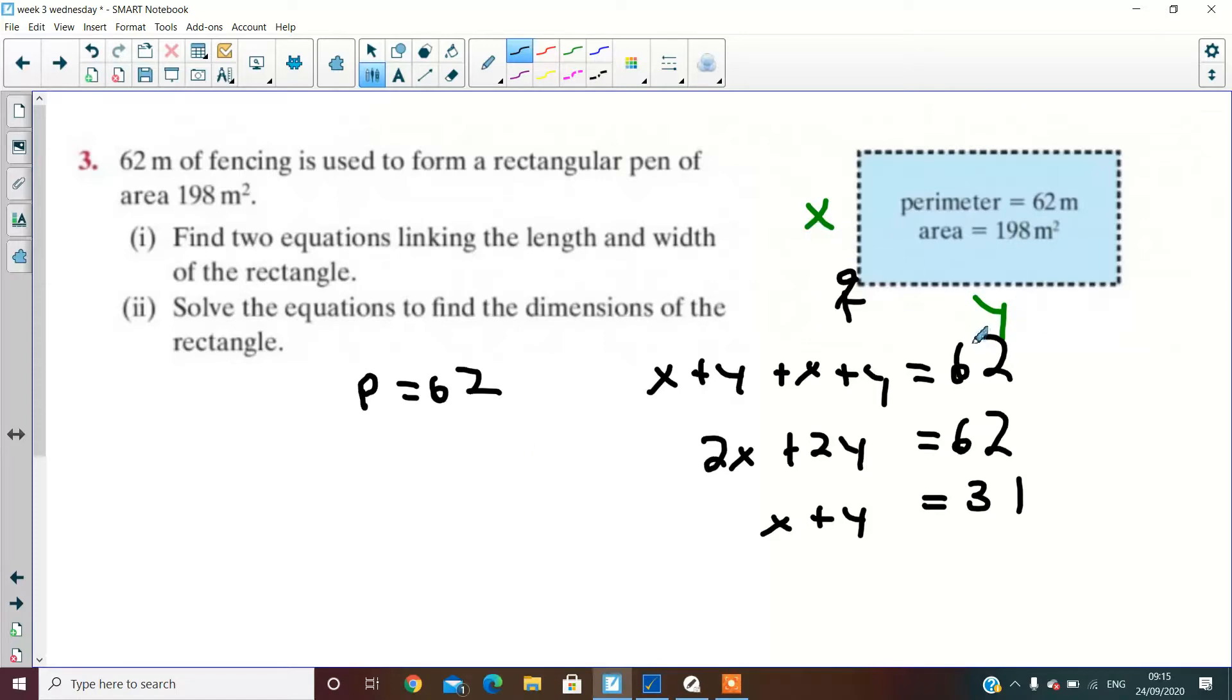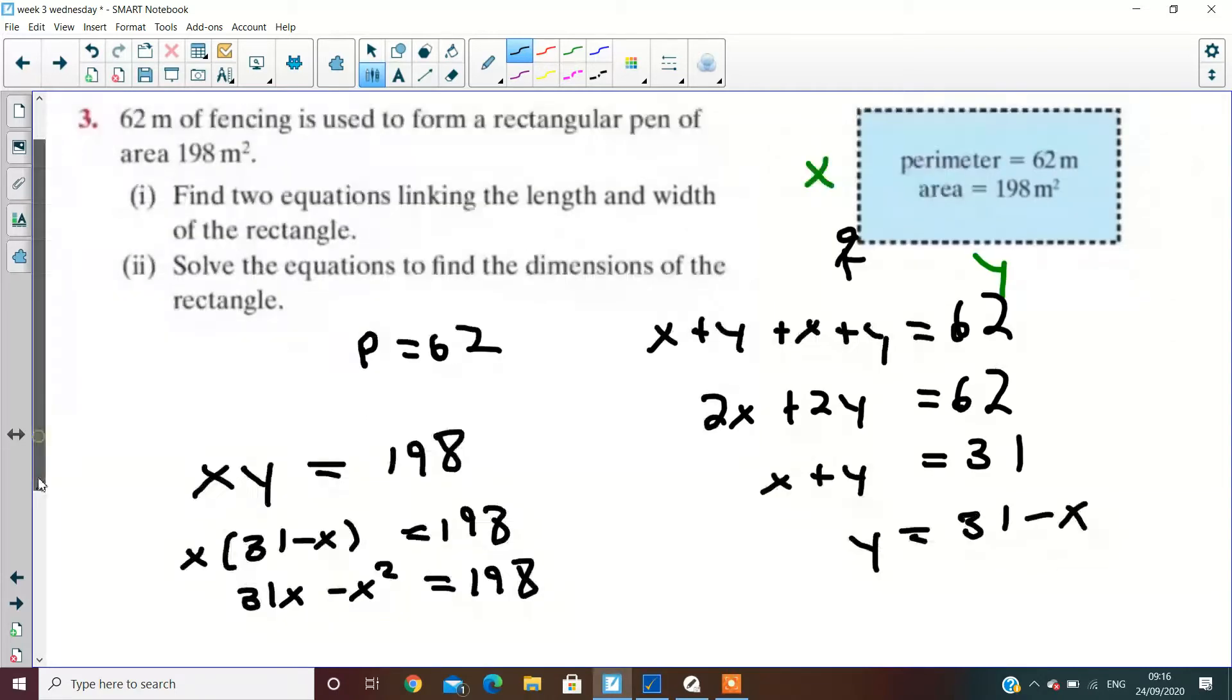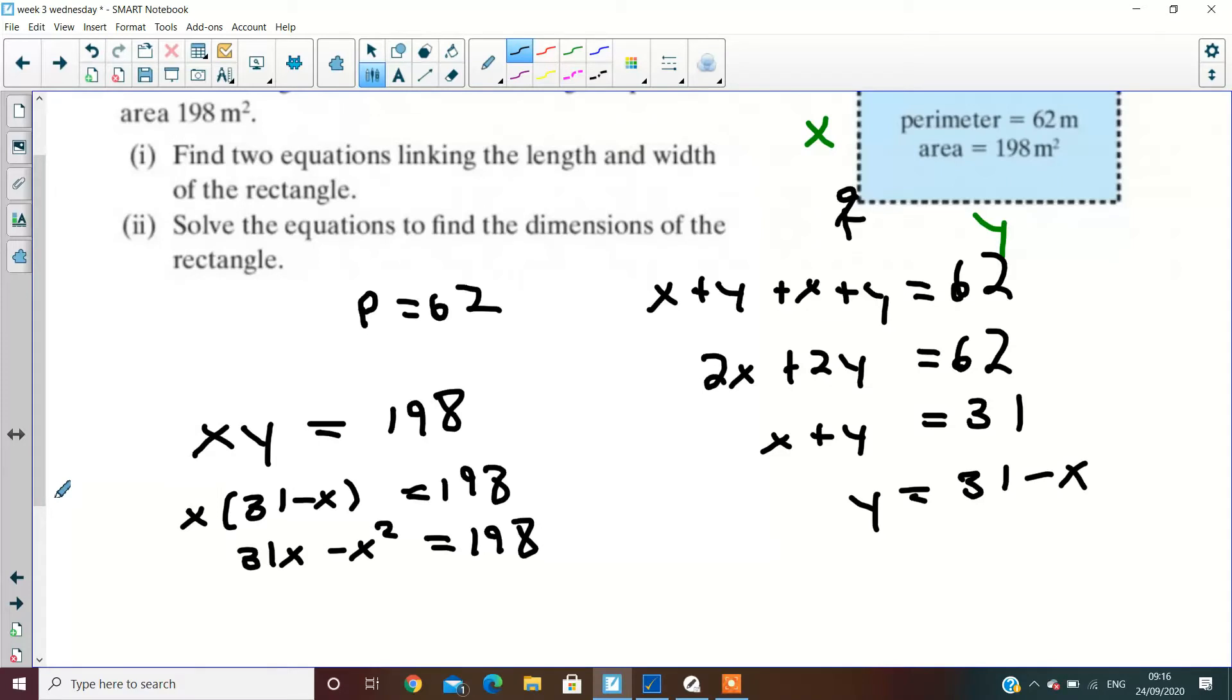Alrighty, next one: area is 198. So what's that? Length multiplied by width is 198, so x multiplied by y is 198. Just get y on its own, y equals 31 minus x. And then to finish this off, you're going to have x times 31 minus x equals 198, and then 31x minus x squared equals 198. All you guys know how to finish that off. It's just a quadratic equation. Get the two x values, get the two y values. You can do that later on.